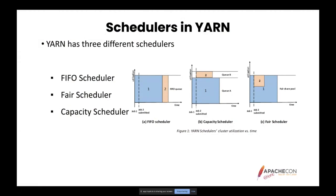FIFO, as the name suggests, orders jobs based on submission time — the first to arrive gets served first, and when it finishes, the next one gets launched. This doesn't require any configuration; it is more like a proof-of-concept scheduler. As this talk is about migrating FAIR Scheduler to Capacity Scheduler, I will give a more detailed overview of those two schedulers.